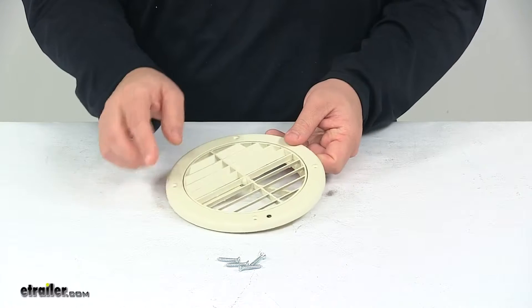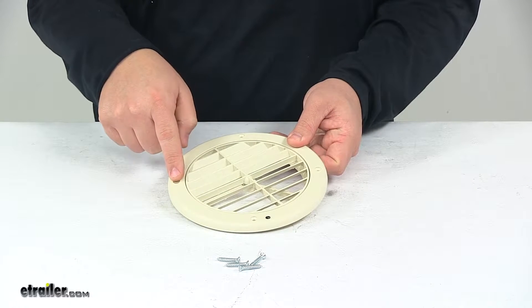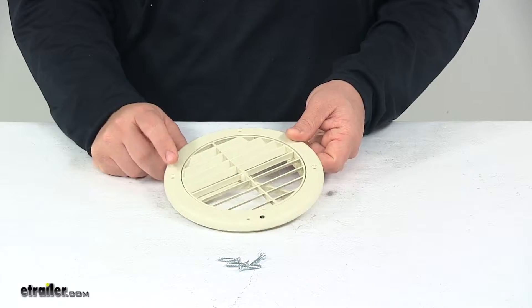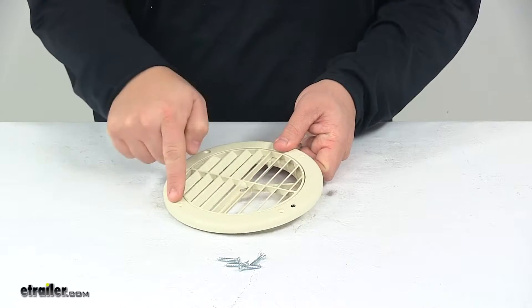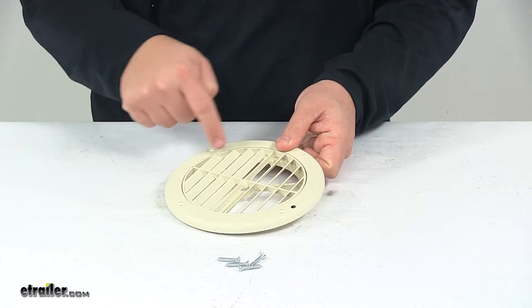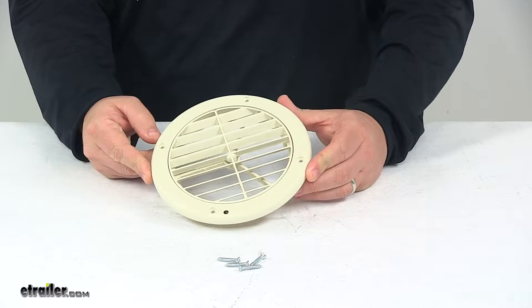The mount holes going straight across are separated on center by about six and three-sixteenths inches. Center on center to the closest one, we're looking at a separation of around four and three-eighths inches.